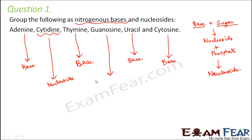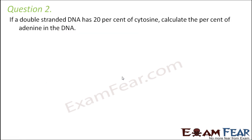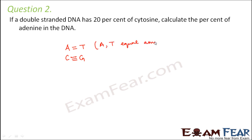Question number two: if a double-stranded DNA has 20 percent of cytosine, calculate the percentage of adenine. In DNA there are four bases: A, T, C, and G. Adenine and thymine always pair up with each other, and C and G always pair up with each other. So A and T are present in equal amounts, and similarly C and G are also present in equal amounts.